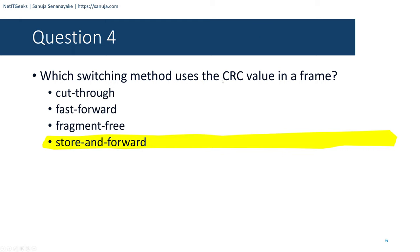Question number thirteen: When the store-and-forward method of switching is in use, what part of the Ethernet frame is used to perform an error check? Options are: protocol type in the header, source MAC address in the header, destination MAC address in the header, or CRC in the trailer. The answer is CRC in the trailer. When store-and-forward switching is used, the CRC trailer is used to ensure that errors in the frame are checked.